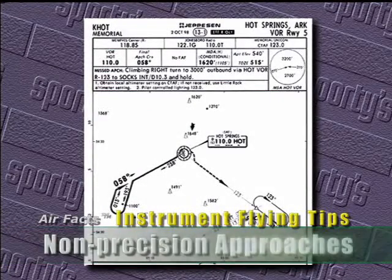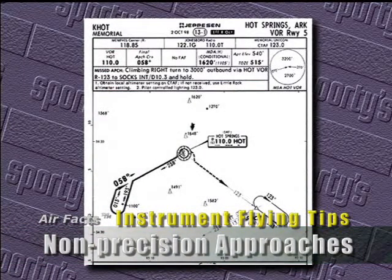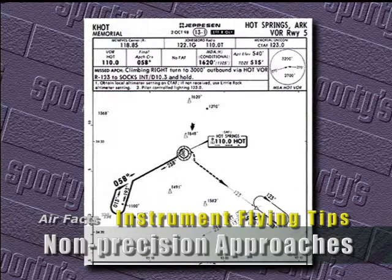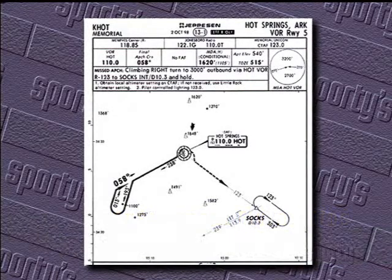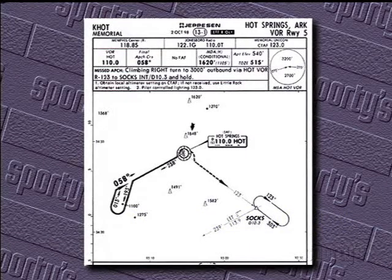The reason they're called non-precision is because there is no electronic vertical guidance, as on an ILS. But, properly flown, a non-precision approach can be done with as little risk as a precision approach, like an ILS.